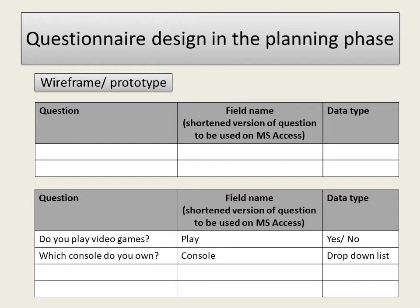If we were producing a questionnaire for this task, you'd need to produce a wireframe or prototype. The first table shown is empty with question, field name and data type columns. You produce this wireframe to see how it's going to be presented and how you would store the data in Access later. For example, the question 'do you play video games?' is shortened to 'play' with a yes/no data type, and 'which console do you own?' uses a drop-down list of possible consoles.